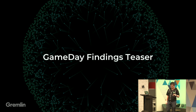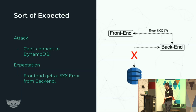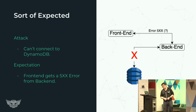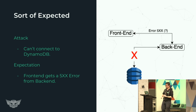So that's the high level about why to do it and how to start thinking about executing game days. I also want to cover some findings — general things we've seen with our customers running game days. Here's one scenario: they ran an attack on their backend to their database — they were using DynamoDB. The expectation was that when DynamoDB is unavailable, you should get an internal error, a 5xx. The result they saw was a 404. It's nuanced, but a 404 doesn't really tell the customer or end user the proper thing — this is actually an error on the backend. That's something they realized and wanted to fix.